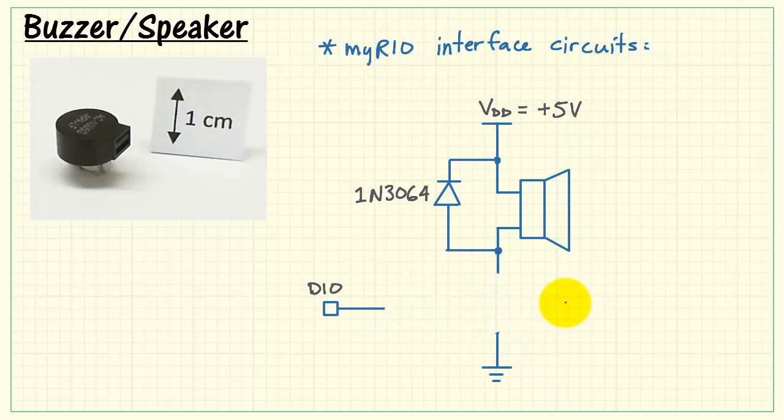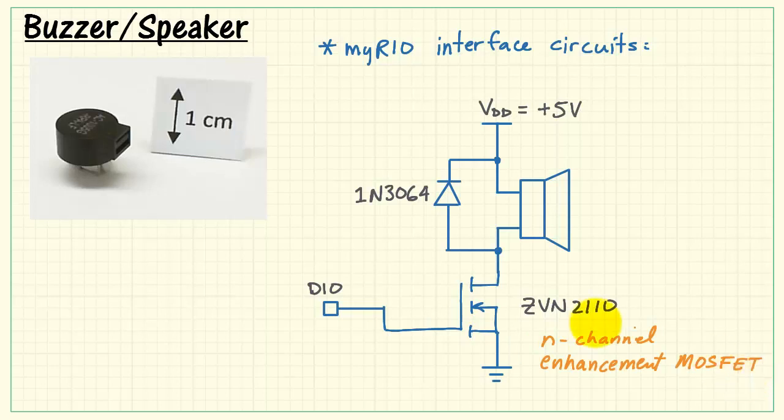The 1k base resistor works nicely when you're using the NPN transistor. However, if you prefer not to use that resistor at all, you can use the ZVN-2110 n-channel enhancement MOSFET that's also included in the starter kit. This way you eliminate the resistor and just do a direct connection to the DIO.